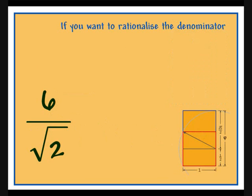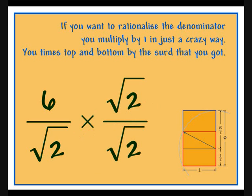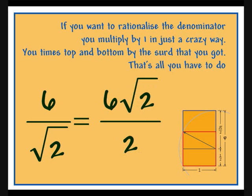If you want to rationalize the denominator, you multiply by one in just a crazy way. You times top and bottom by the surd that you got. That's all you have to do.